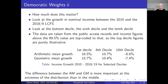An implication of this is that if you want to use democratic weights, as the HCIs do, you should also draw attention to the geometric mean of household income and not simply to the arithmetic mean and the median. To illustrate, I've looked at the growth in nominal incomes between the 2010 and the 2018-19 LCFS, examining growth rates of the arithmetic mean and the geometric mean of the bottom decile, the sixth decile, and the tenth decile.